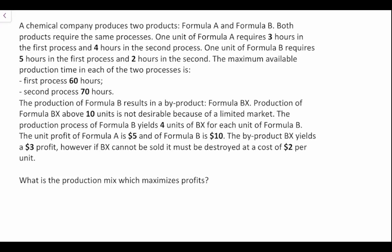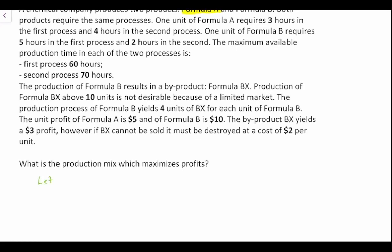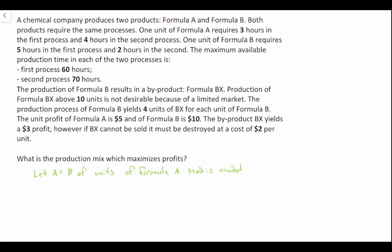So let's go ahead and write out our decision variables. Our first decision variable: let A equal the number of units of Formula A that is created. We can then set a decision variable for Formula B, so let B equal the number of units of Formula B that is created.